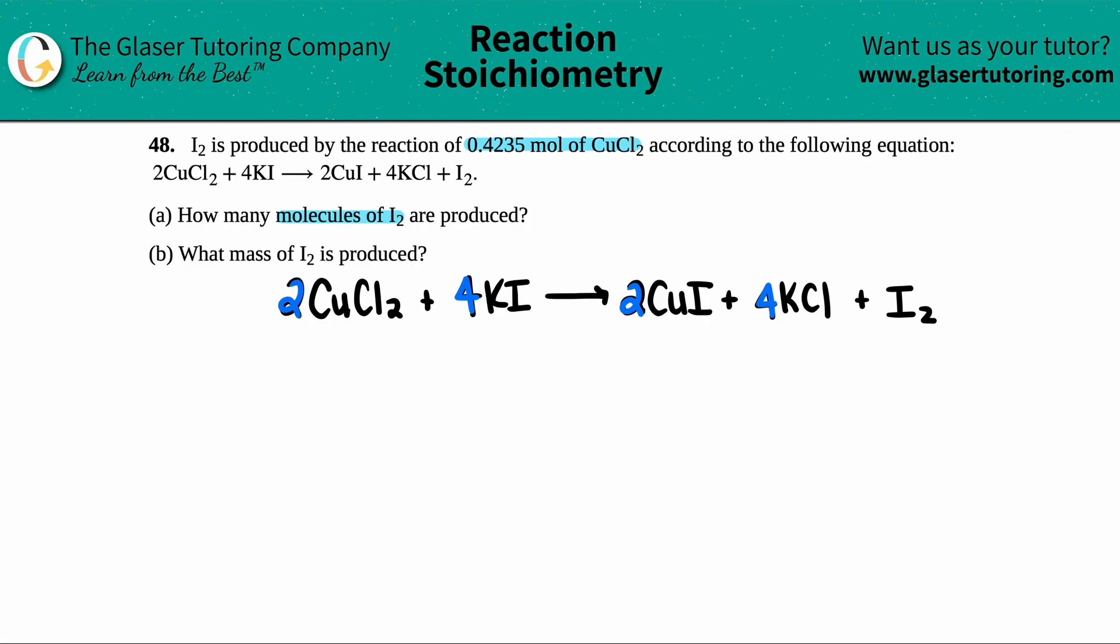So now to keep everything together, I like to write down the information that I know, and what I'm trying to solve for. So they told me that I have 0.4235 moles of CuCl₂. So I'm going to go to CuCl₂, and just underneath, I'm just going to say, okay, I got 0.4235 moles. Cool.